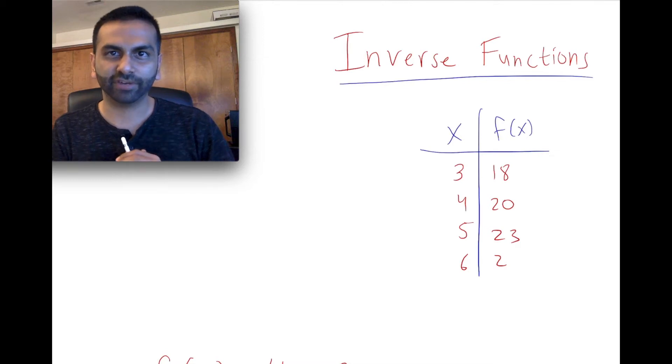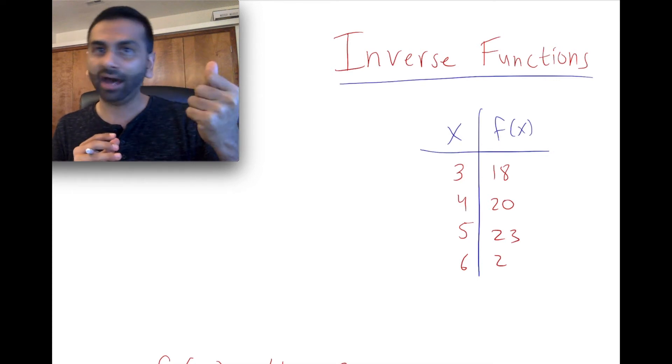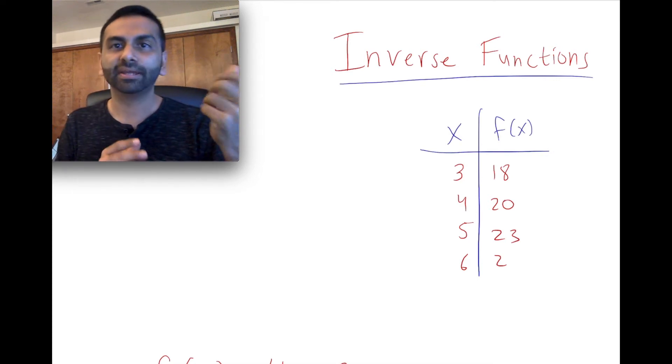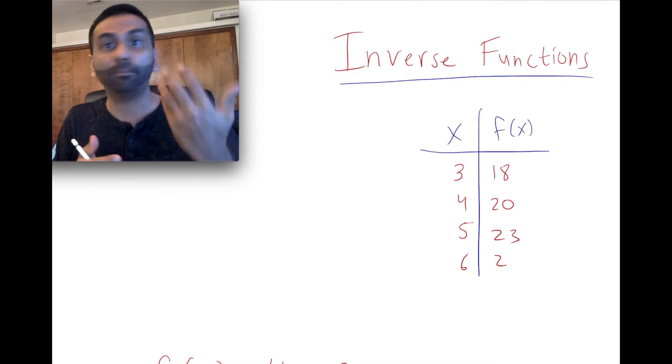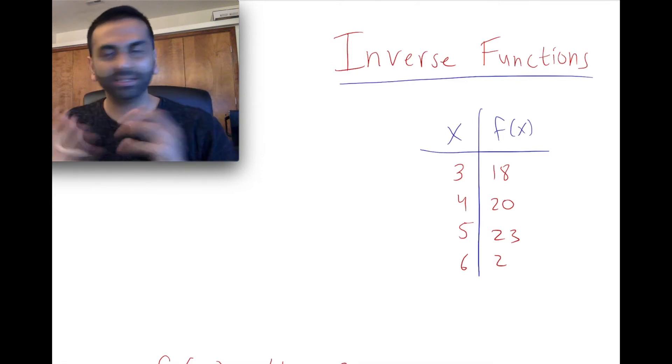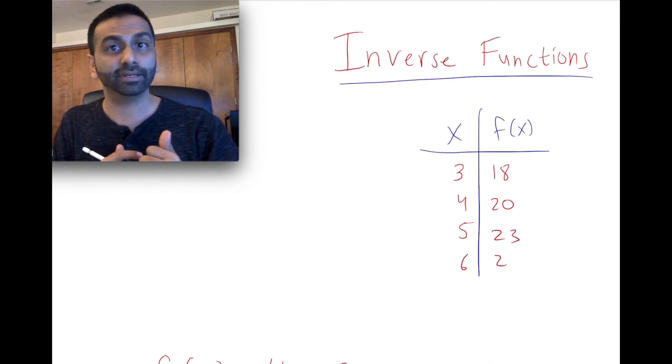Now let's talk about inverse functions. The inverse of a function is really just switching the inputs and the outputs. So instead of the number of apples giving you the total cost of your bundle, it's going to be the opposite. Now you're inputting the total cost, and it's going to output how many apples it was. So really, that's what it is. It's switching what the x variable is and what the y variable is.